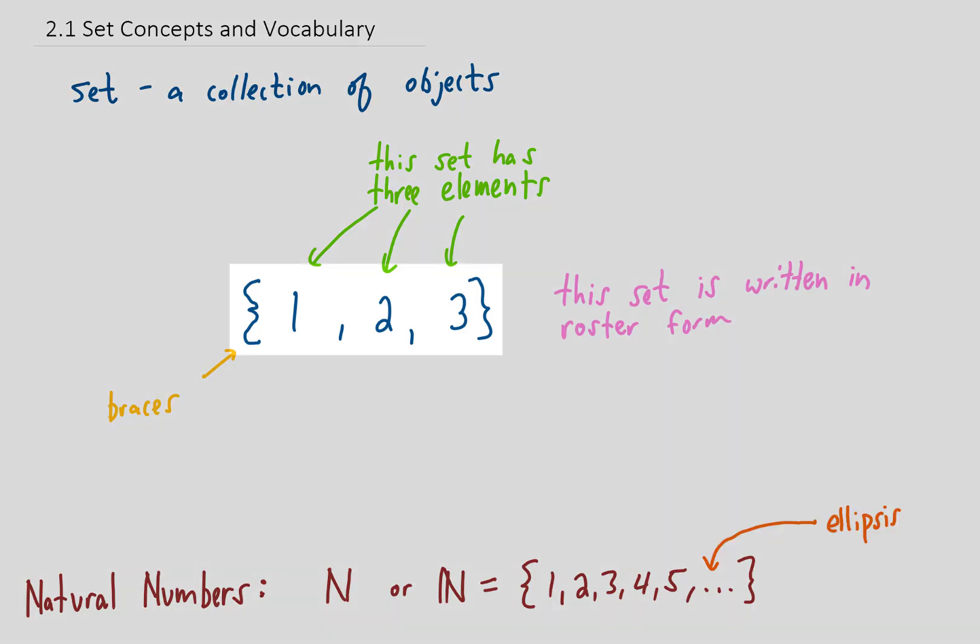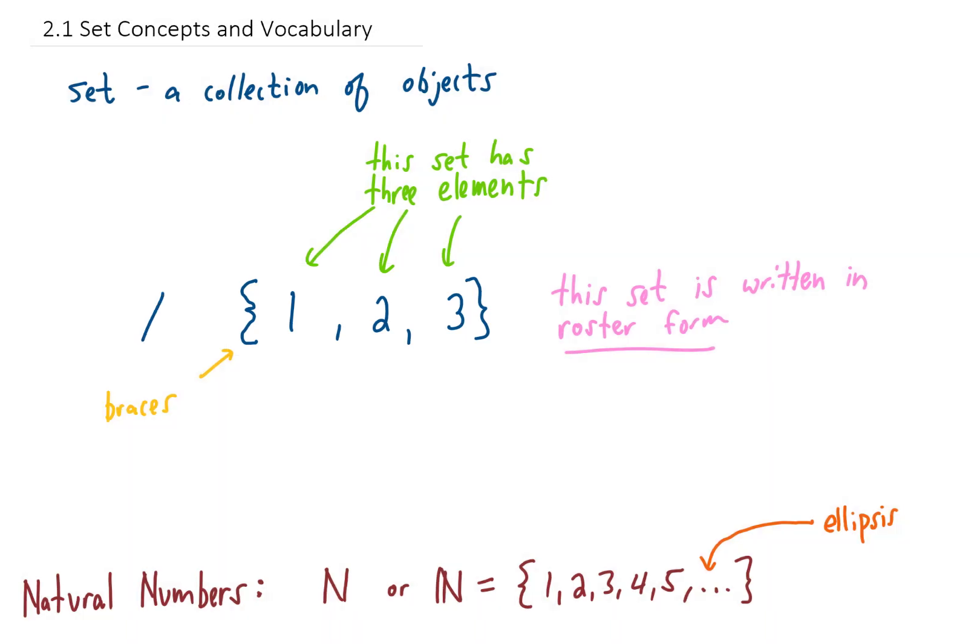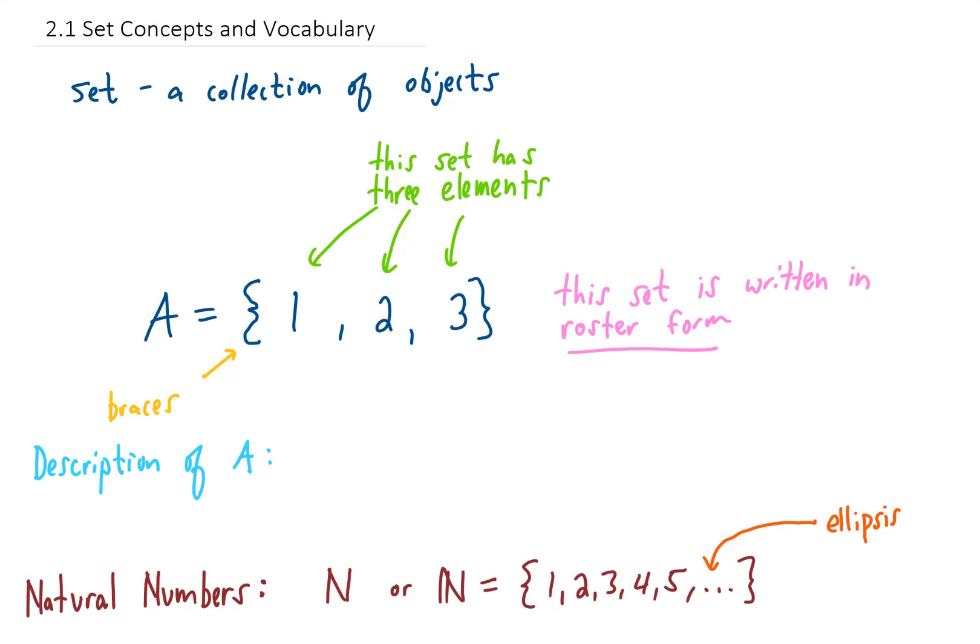So back to the set {1, 2, 3}, we said that this was written in roster form. We could also write this set in description form. To describe this set, let's name the set A, and our description of A is given in this way.